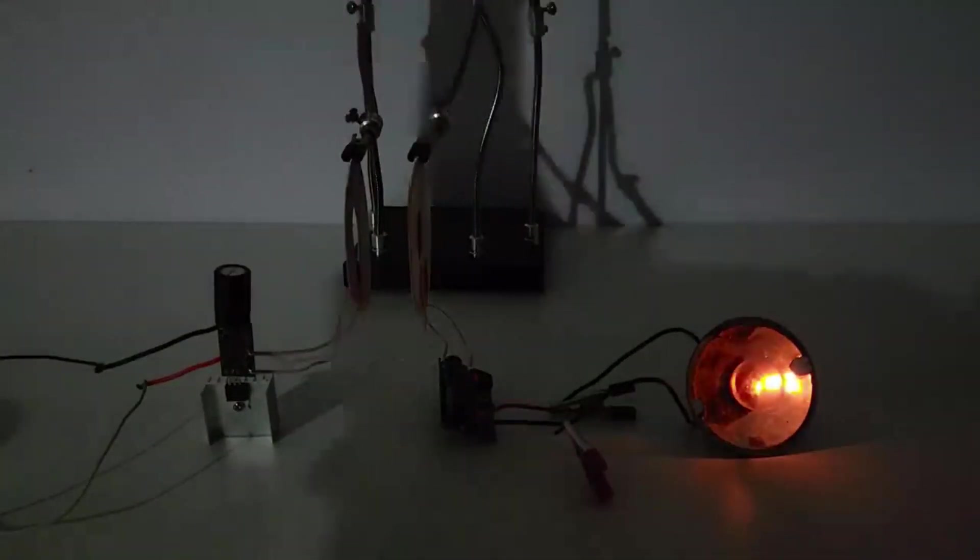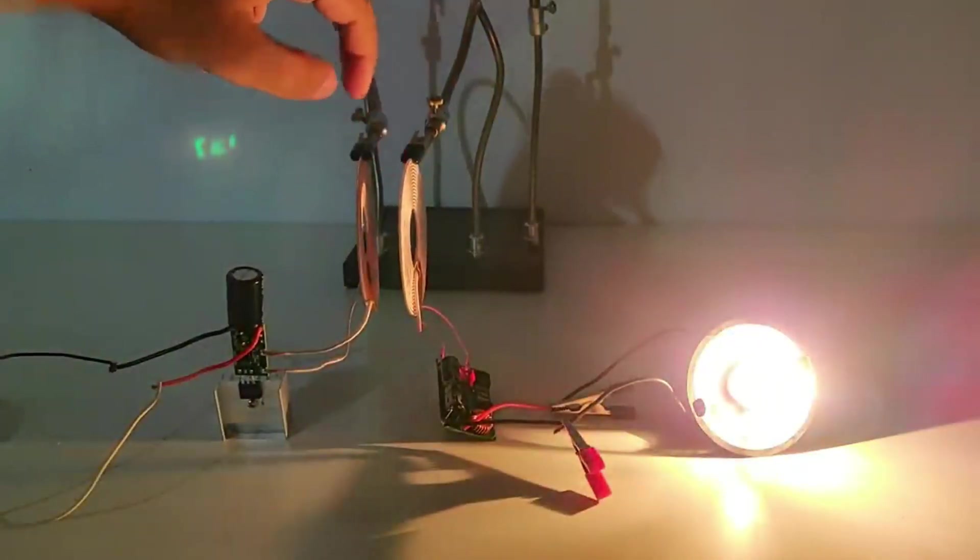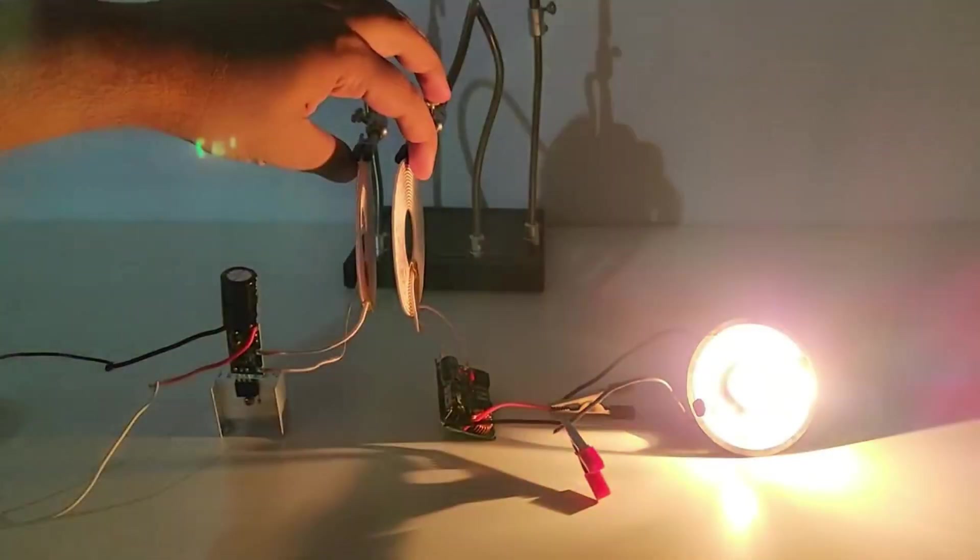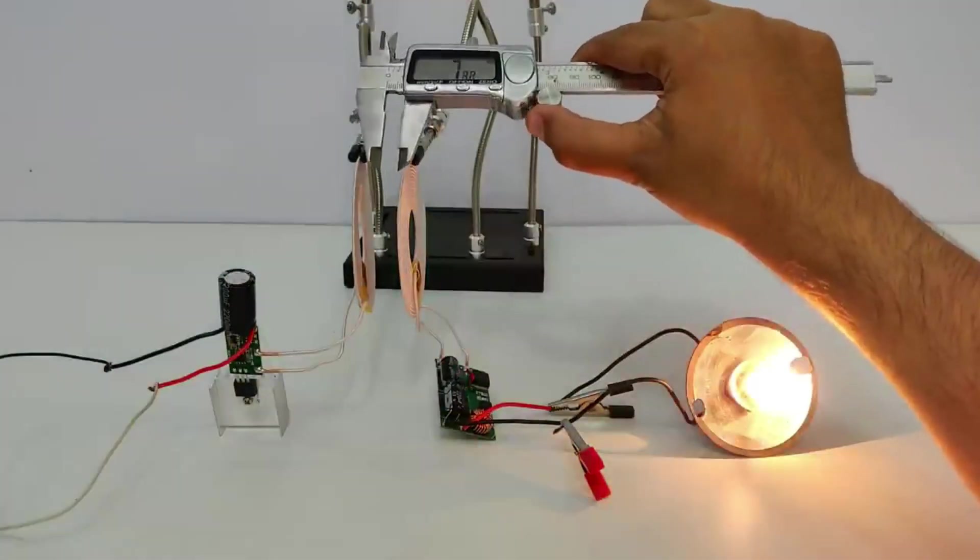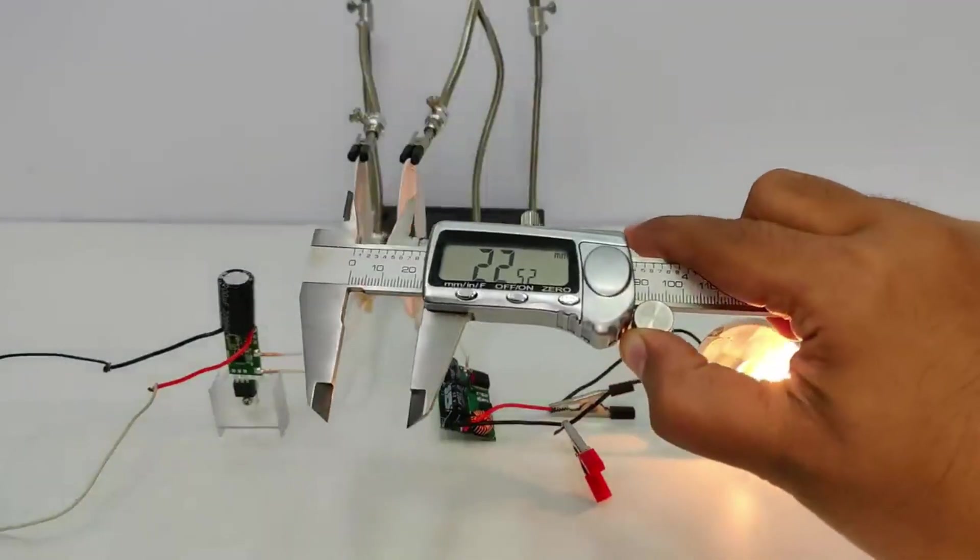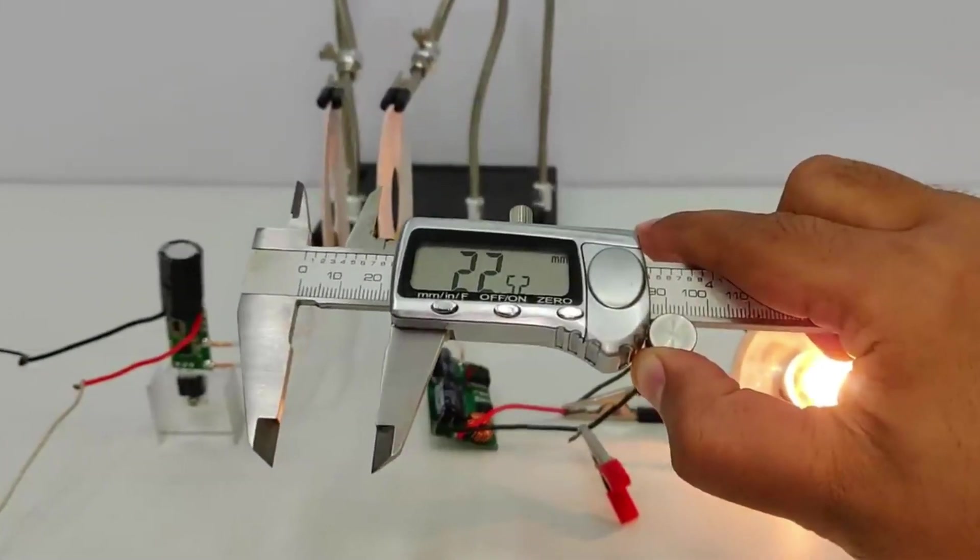And now it's much brighter. So that's the distance. Now it's fully bright. Here I'm going to do this coil distance measurement test. So here as you can see that at 22.5 millimeters it is giving out full potential output. So it's around 2.2 centimeters.